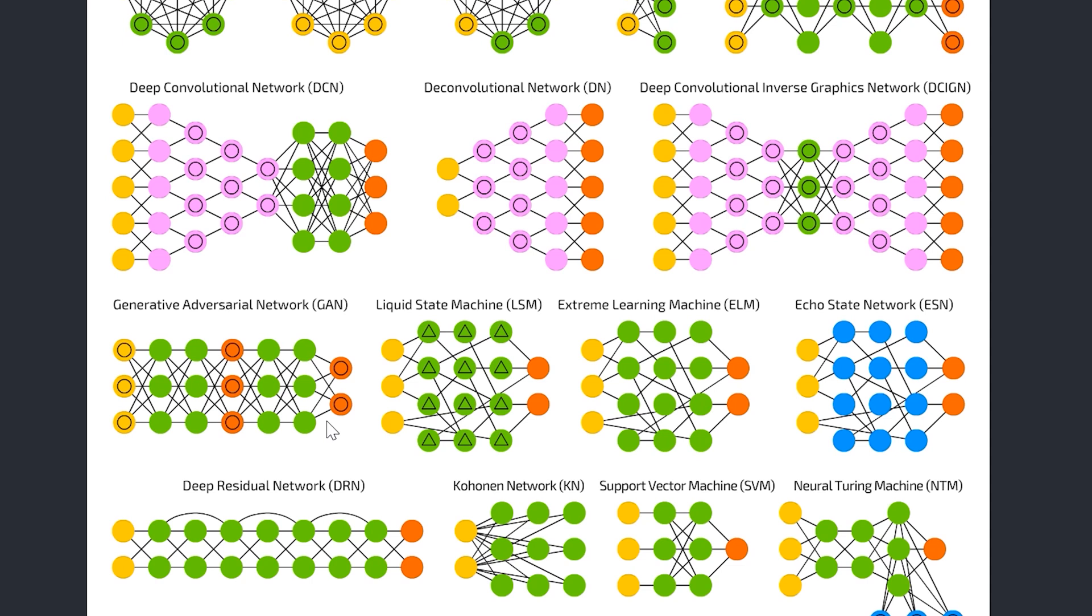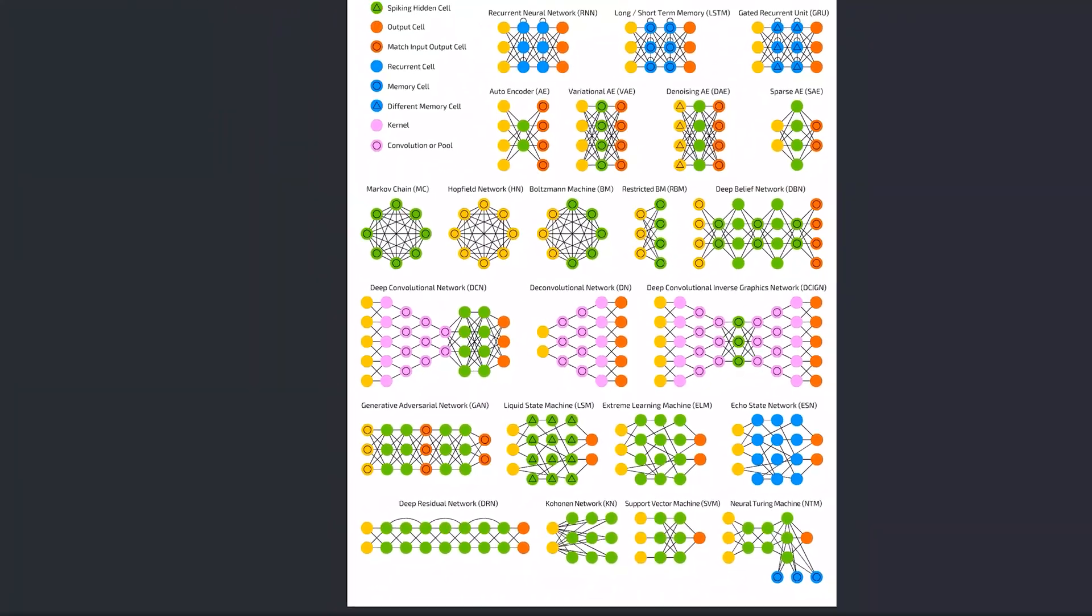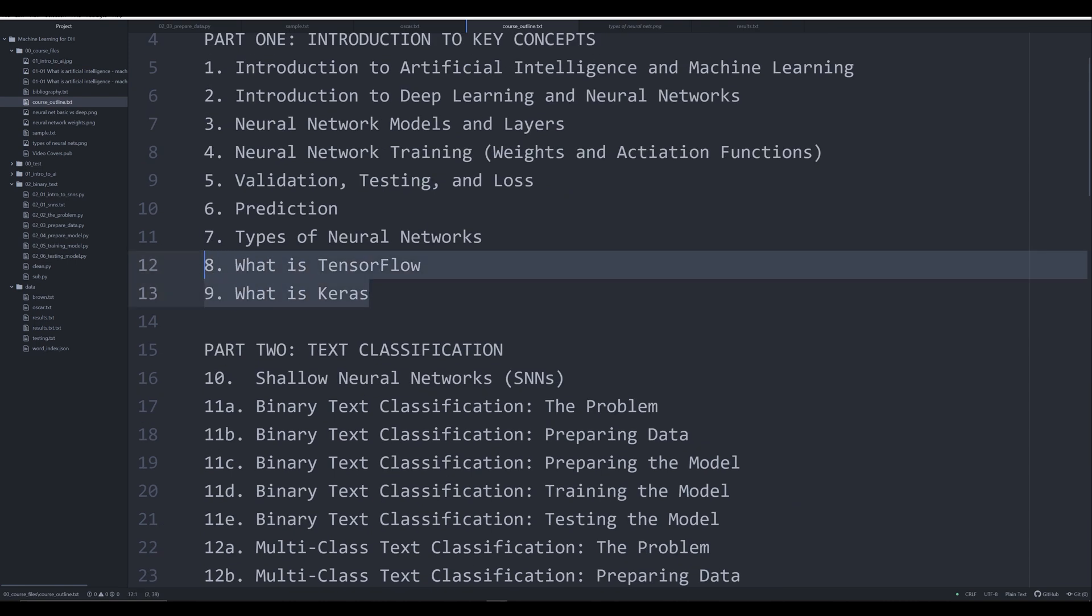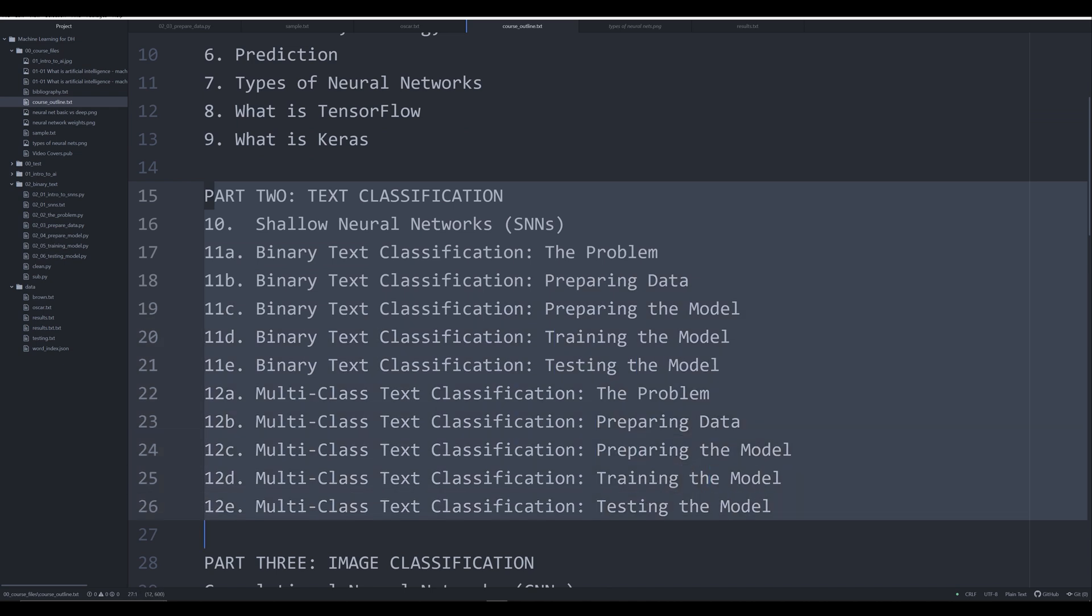These are some of the types of neural networks that are out there and what they're used for. Really what I'm trying to do in this series is introduce you to neural networks generally so you can apply these skills to your domain-specific problems. That's it for this video. In the next two videos we're going to start looking at TensorFlow and Keras so we can start using them in part two for text classification. Thank you for listening, and if you've enjoyed this video please like and subscribe.